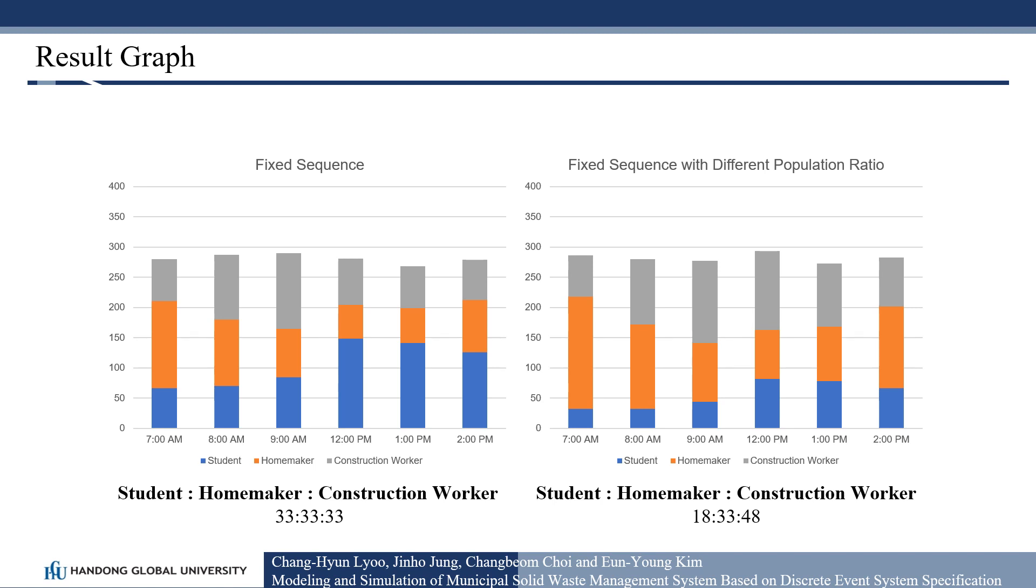The pattern of increase and decrease in the number of complaints from the residents with each occupation were similar to those in the case of equal composition rate. It was found that the results vary depending on the population composition.